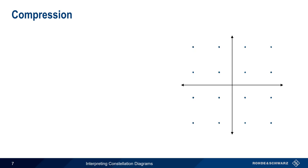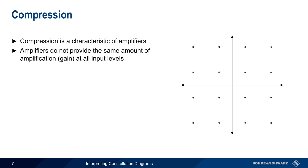Now let's move on to amplitude effects, starting with compression. Compression is most often associated with amplifiers, and refers to the fact that amplifiers do not provide the same amount of amplification for all input levels. In almost all cases, the gain provided by an amplifier is lower for higher input powers, and this reduced gain at higher powers is what's meant by compression.